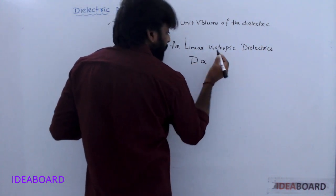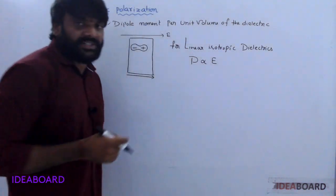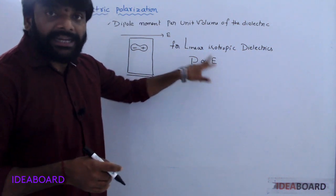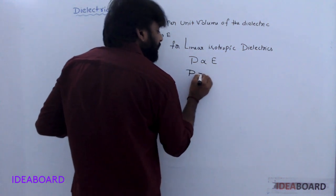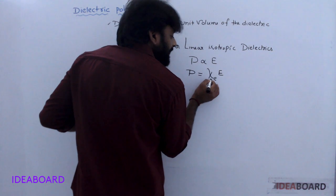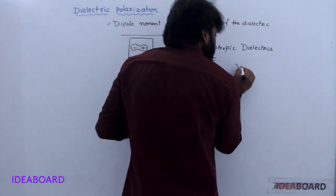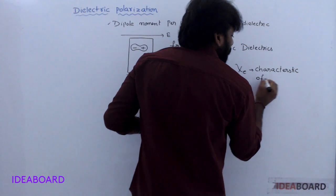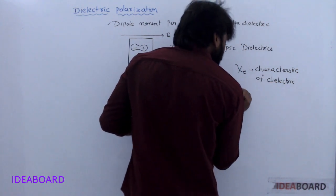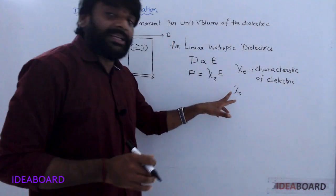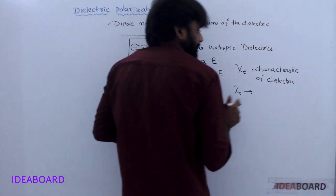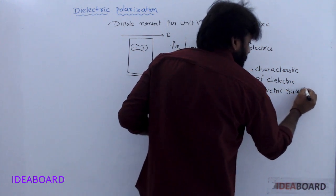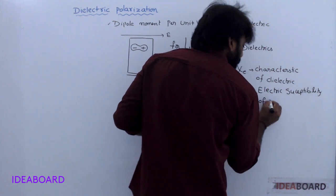Dielectric polarization P is directly proportional to electric field intensity E. The proportionality constant here is Xi (χ). Xi is the proportionality constant and it represents the characteristics of the dielectric. The pronunciation is Xi, and it is the electric susceptibility of the dielectric.